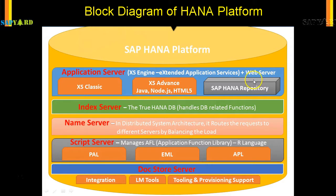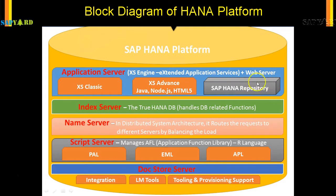The XS Engine also has a web server, which is why you can connect with a browser. This XS server can be divided into two types: XS Classic and XS Advanced, depending on their capabilities. It also has a repository — just like the ABAP repository in a C80 — where HANA stores source codes like JavaScript, HTML, and HANA CDS. All HANA artifacts are stored in this repository of the application layer.